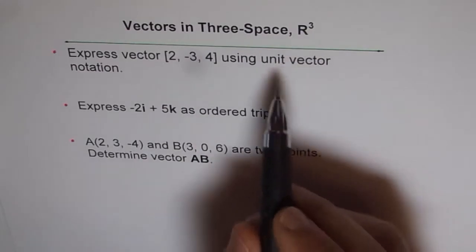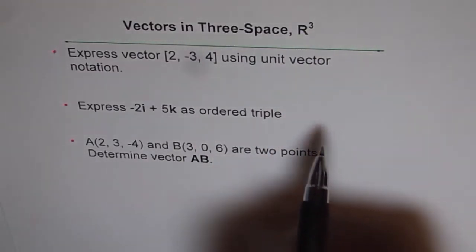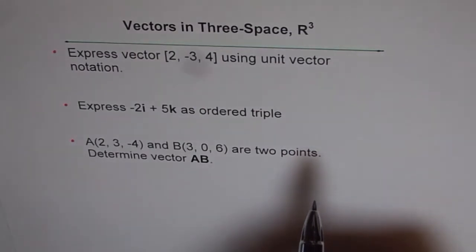Unit vector notation uses i, j, k, where i, j, k are unit vectors along the x-axis, y-axis, and z-axis respectively.